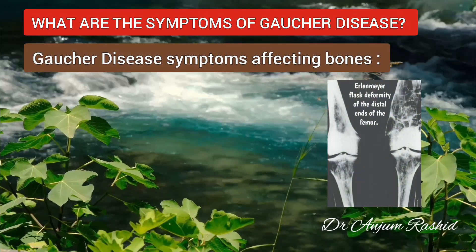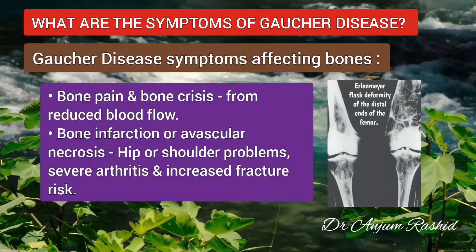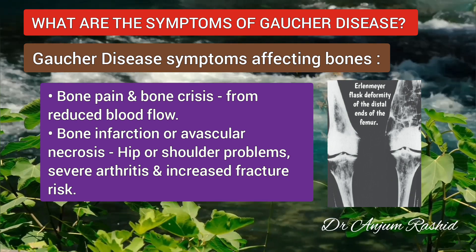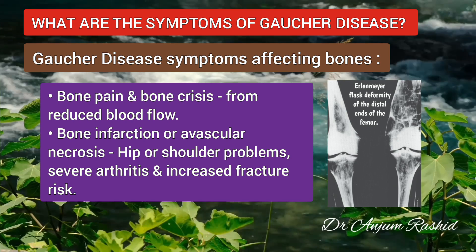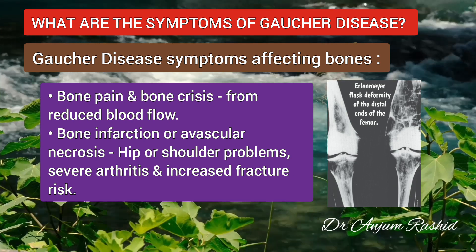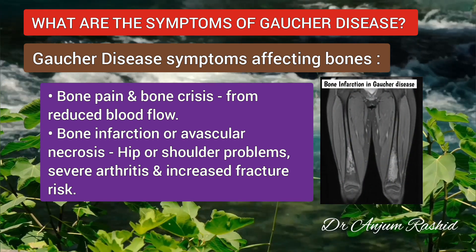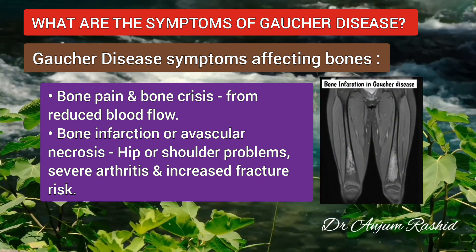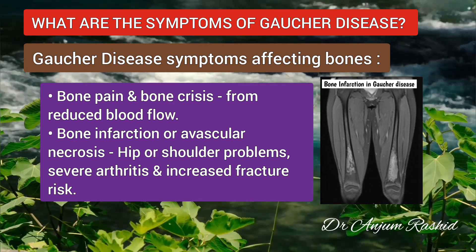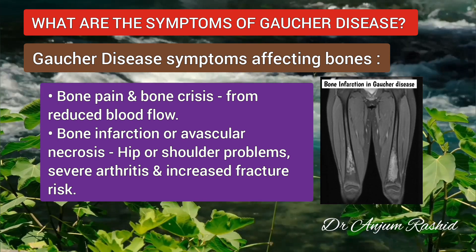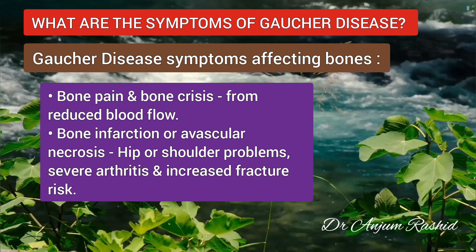Gaucher disease symptoms affecting the bones are also common. These include bone pain and bone crisis — patients often experience severe episodes called bone crisis resulting from reduced blood flow to the bones. Next is bone infarction or avascular necrosis, which occurs when parts of the bone don't get enough oxygen, causing bone tissue to deteriorate and die. Bone infarction often leads to hip or shoulder problems, severe arthritis and increased fracture risk.